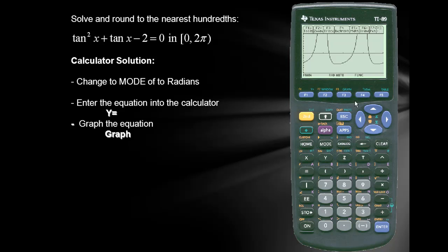We're asked to find the solutions or the x-intercepts or the zeros of the function. And by taking a look at the graph we see that there are four x-intercepts or four zeros or four solutions in the interval from 0 to 2 pi. So we'll use the zero function on the TI-89 to calculate them.